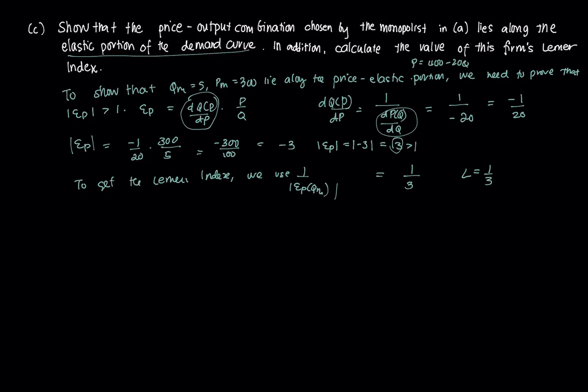We can do the long cut method as well. Alternatively, L(QM), your Lerner index, equals P(QM) minus MC(QM) over P(QM).